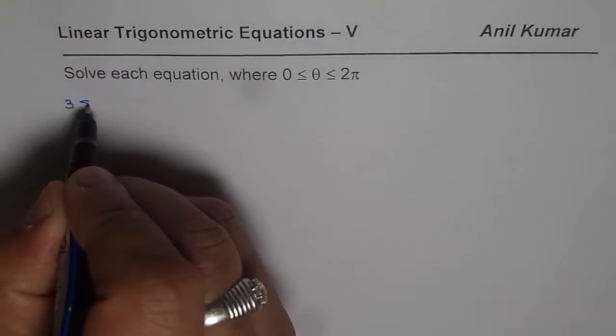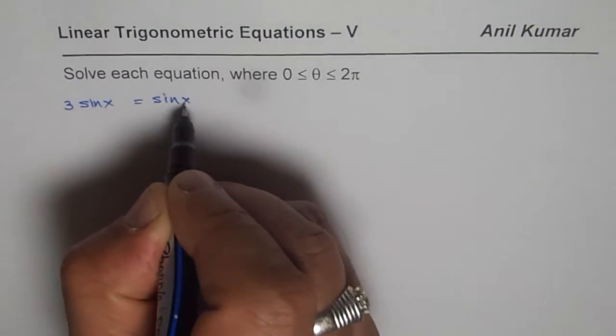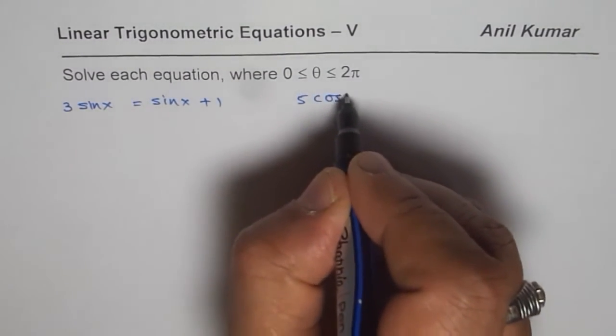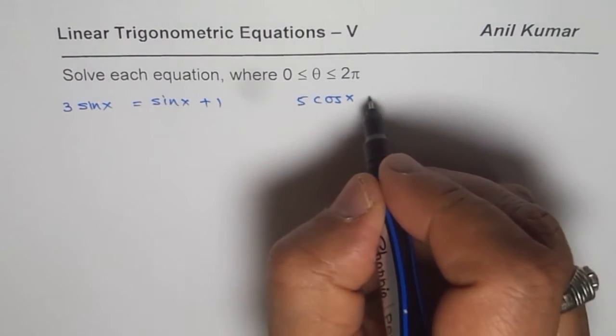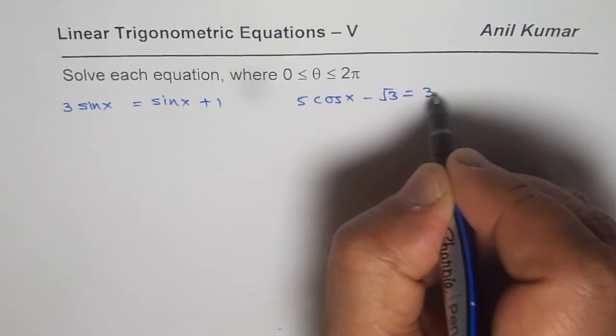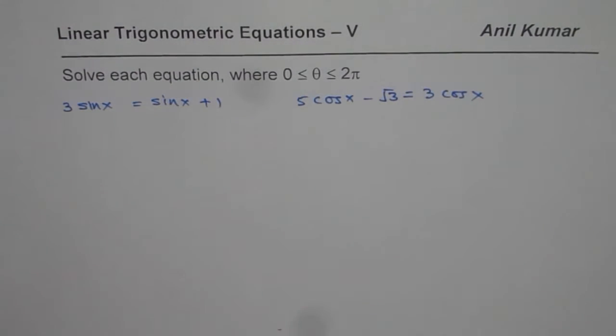So the first one will be 3sin(x) equals to sin(x) plus 1 and then we will do 5cos(x) minus square root 3 equals to 3cos(x). So we will solve these two equations and then let us see if we could do some more for you.